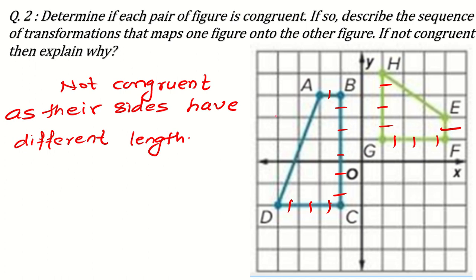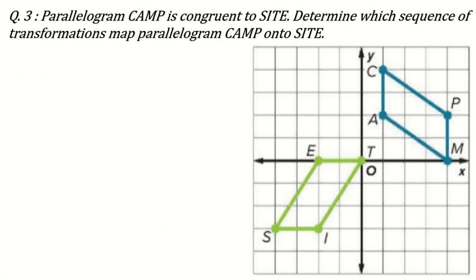Whatever reason you want you can write, but it should be in a proper mathematical way. If they are not congruent, then there is no question of transformation. Now another question: parallelogram CAMP is congruent to SITE. This is the CAMP parallelogram and this is SITE. Here it is given that they are congruent, so no need to worry about the sides. Determine which sequence of transformations maps parallelogram CAMP onto SITE.